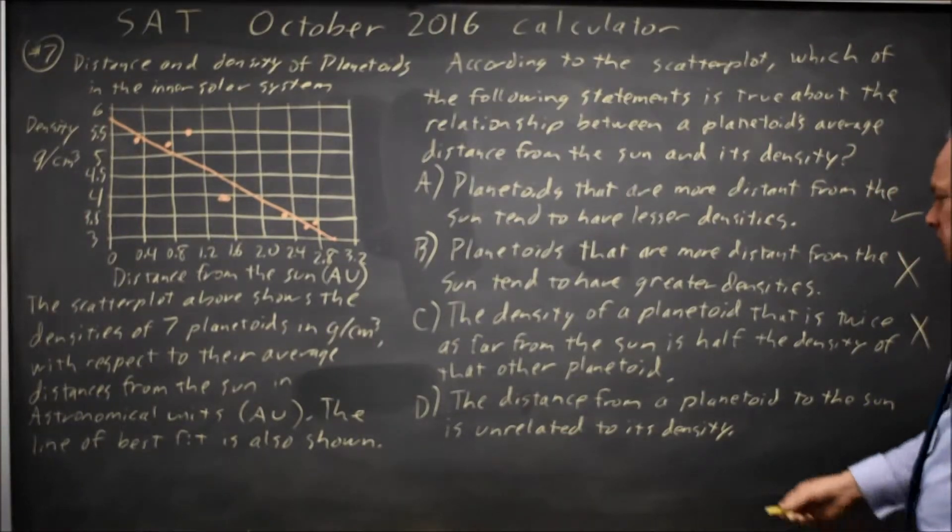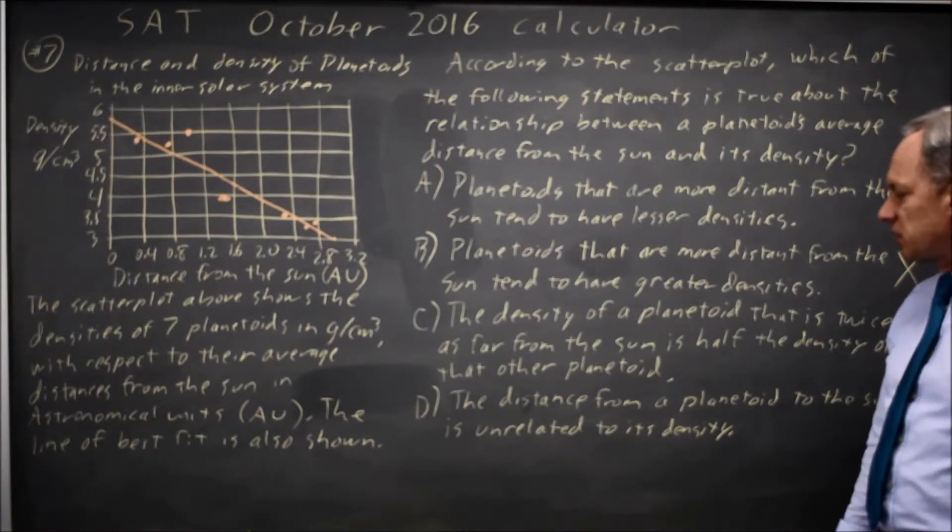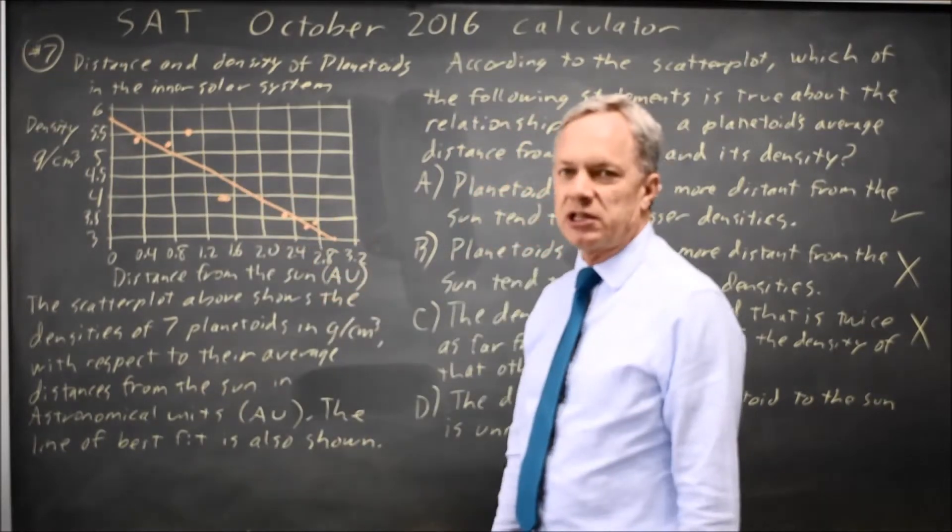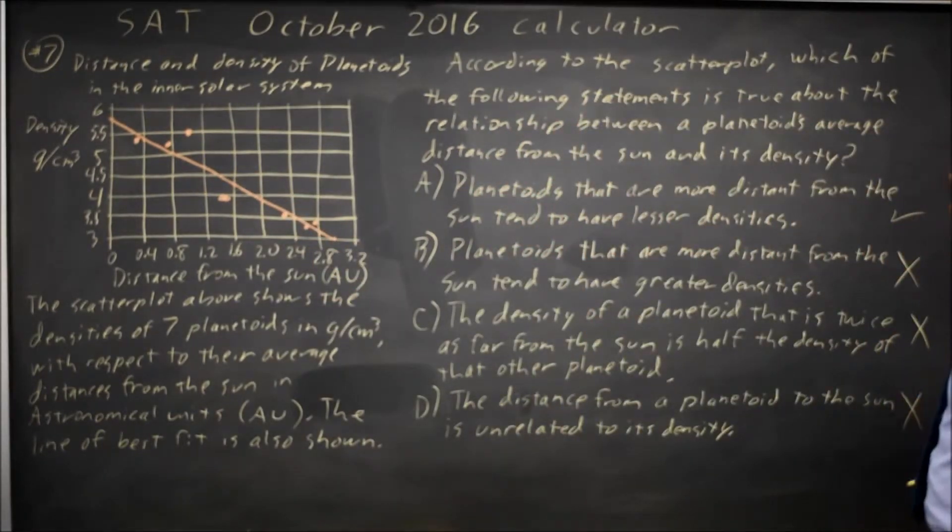And choice D, the distance from a planetoid to the sun is unrelated to its density. When we look at this scatter plot where there's a very strong negative correlation between distance and density, we know that that is not correct.